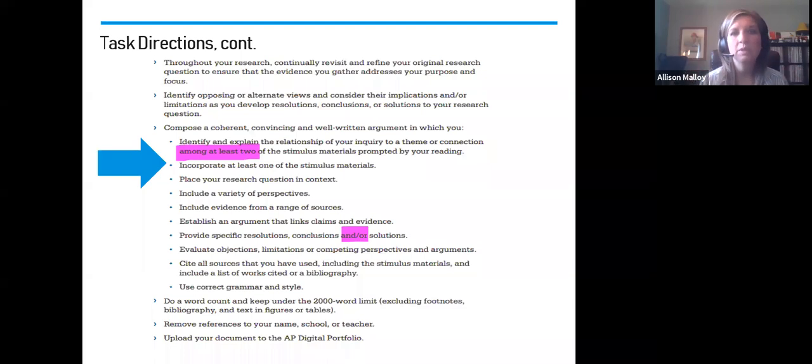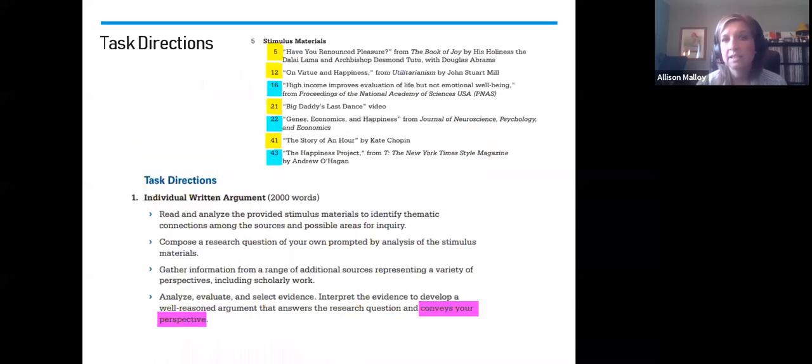Let's talk about what this actually means. When you build your argument, here's where this becomes really clear on what you have to do with the stimulus material. Number one, you have to identify and explain the relationship of your inquiry to a theme or connection among at least two of the stimulus materials prompted by your reading. I'm going to read the next line then I'll clarify. Incorporate at least one of the stimulus material into your argument. So here's what this means. I'm going to go back a slide. I read these seven sources. My job is to make sure that I have a clear connection between two of the sources. Those two sources have established my question and the relationship that my question has to the stimulus material. If I'm not connecting two, I have a problem.